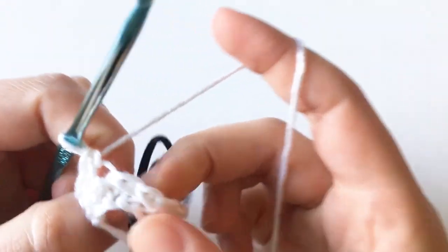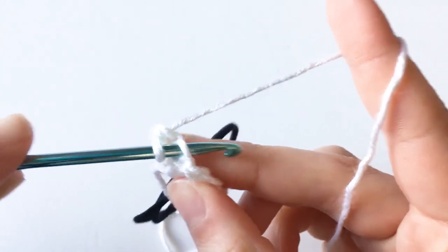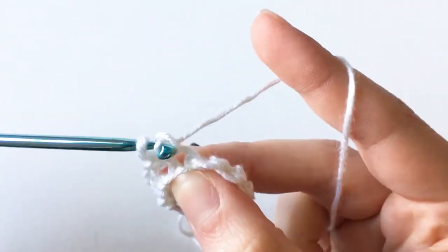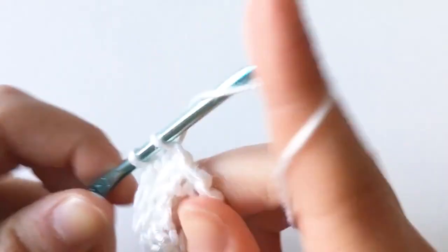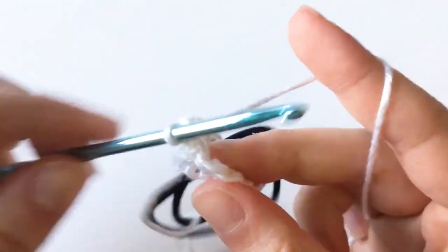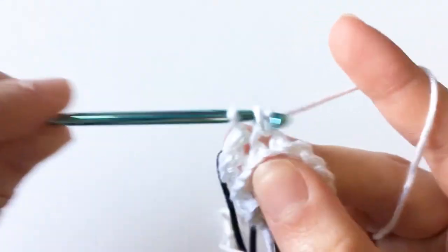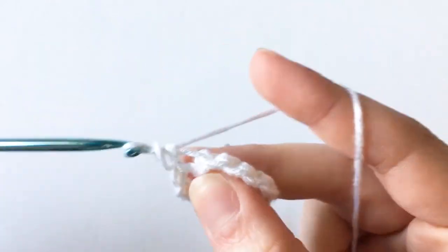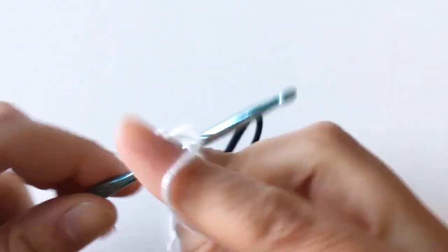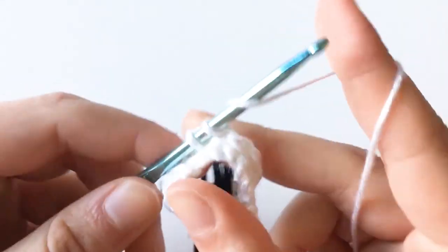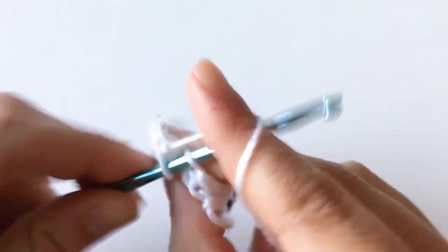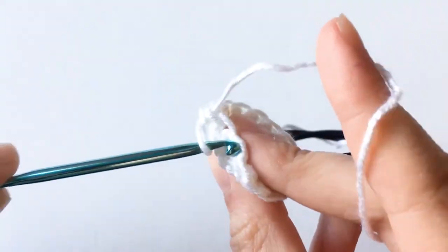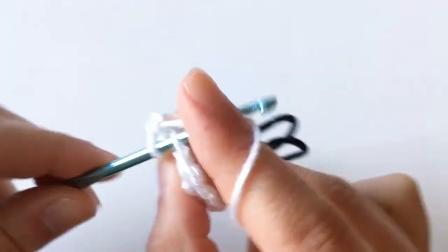This is pretty much the pattern for the scrunchie. You're going to continue working one single crochet in the back loop only until you have about 85 rounds. You're not going to keep track of the rounds by using a stitch marker or joining because the rows are so small. If you're off one or two rounds that's totally fine, it does not make a difference.